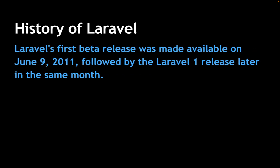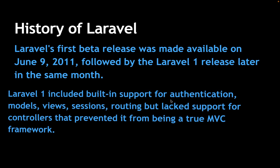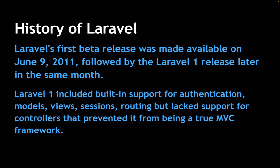Laravel's first beta version was released on June 9, 2011, and after a few days the first version was released in the same month. The first thing Taylor did in Laravel 1 was add support for authentication, which was lacking in CodeIgniter — that was the major goal.